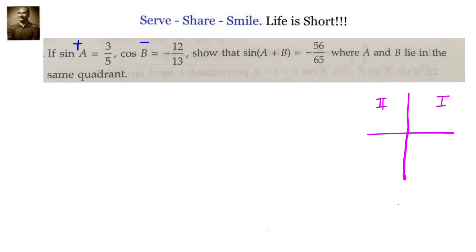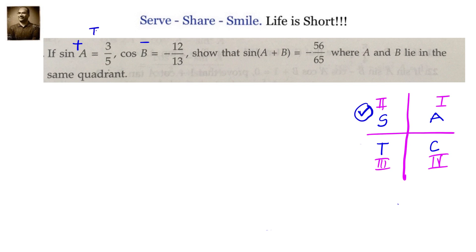First quadrant, second quadrant, third quadrant, fourth quadrant — 'All Silver Tea Cups'. In the first quadrant, all are positive. In the second quadrant, sine and cosecant are positive. In the third quadrant, tangent and cotangent are positive. In the fourth quadrant, cosine is positive. Since we have sine positive and cosine negative, that happens only in the second quadrant — meaning both A and B are in the second quadrant.